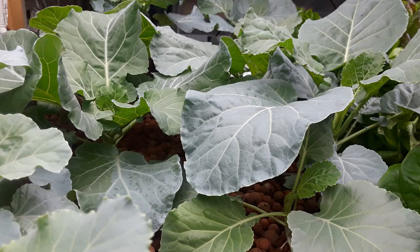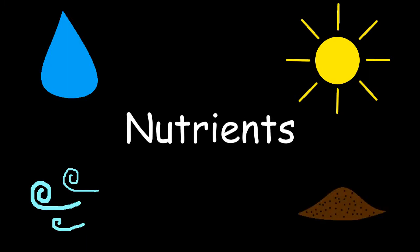Plants need a variety of things in order to live, such as water, light, air, and nutrients. One other thing that they need is space.